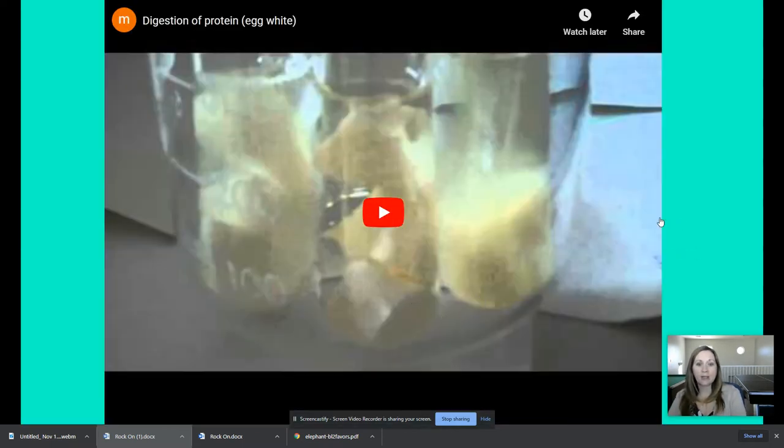So this is an experiment where she's going to set up one tube that does not have any of the pepsin enzyme and one that does. And we're going to observe to see how it breaks down a protein. Now the protein that she uses in the video is egg white because there's a lot of protein in egg white. So we're going to see how it breaks it down.